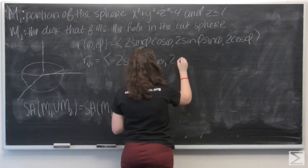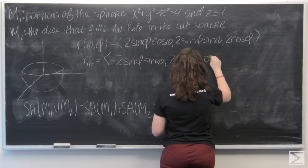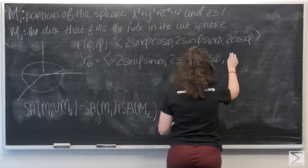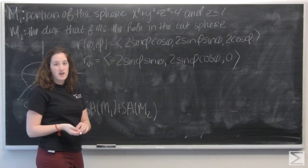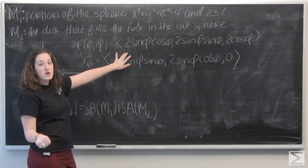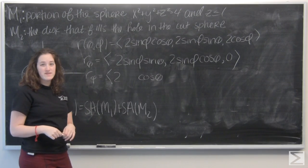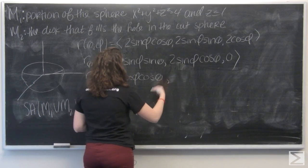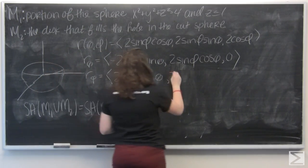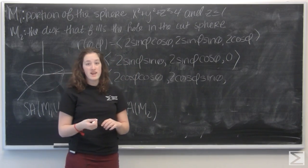For the second coordinate, 2 sin φ is a constant. And 2 cos φ is not a function of θ, so it's just going to be zero. Now let's calculate the partial derivative with respect to φ. In the first coordinate, 2 cos θ is the constant and the derivative of sin φ is cos φ. Again, 2 sin θ is a constant and the derivative of sin φ is cos φ. And I have 2 cos φ whose derivative is going to be negative 2 sin φ.